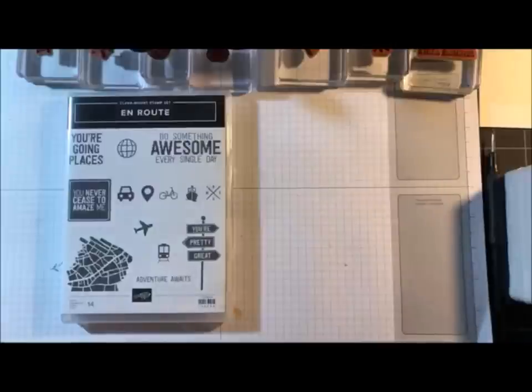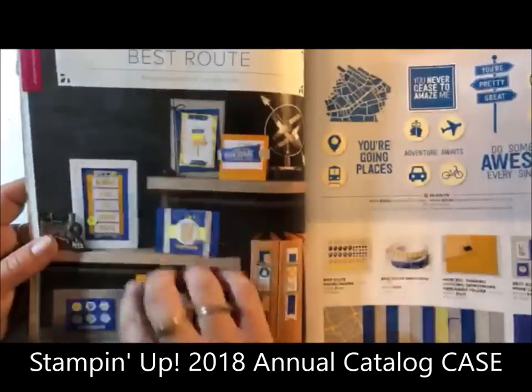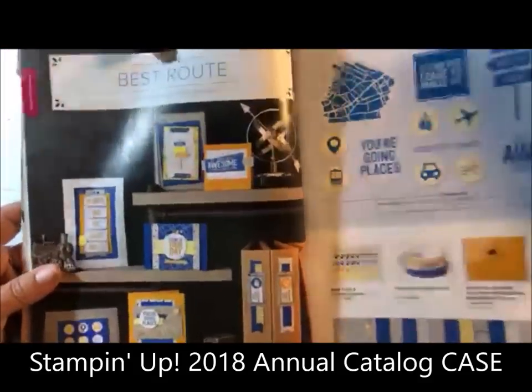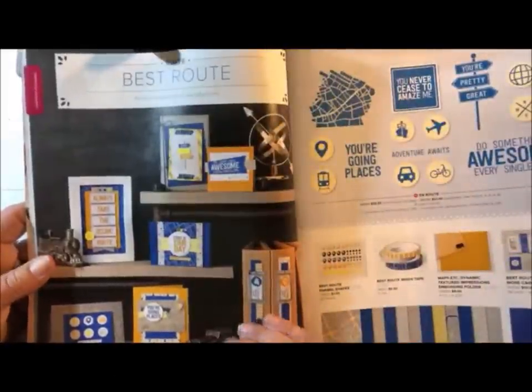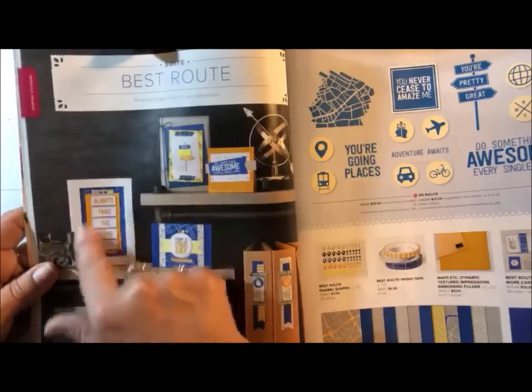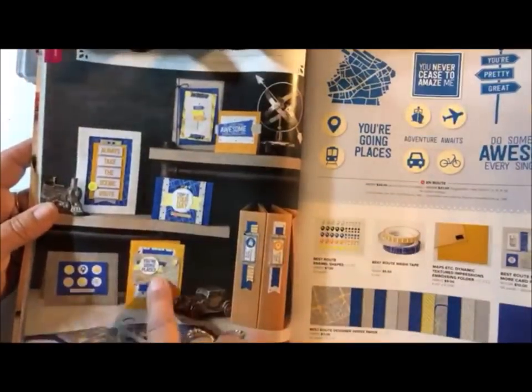I want to show you what I'm going to be working on. So if you have a catalog and want to follow along, I'm going to be casing four cards from page 52. Now there's two on here that I could not do. This one is from the Memories and More card pack, it's not actually a stamp, so I'm not doing that one. But I'm going to be doing one, two, three, and four.